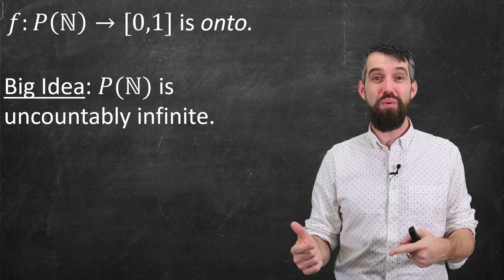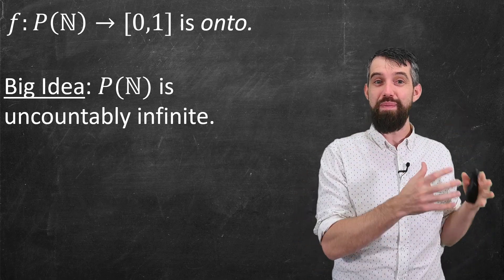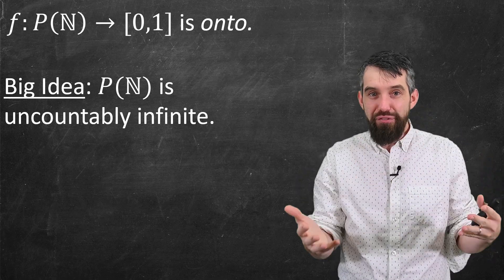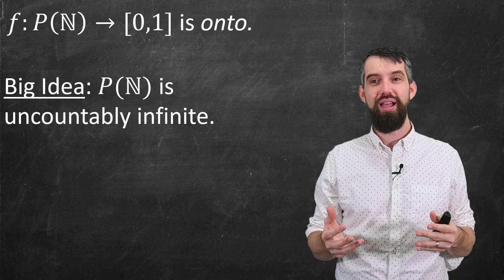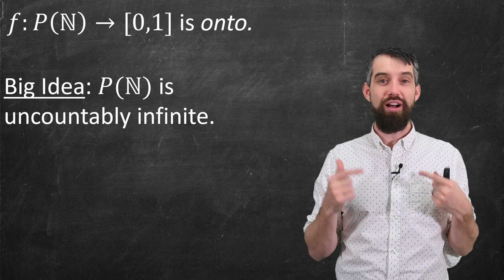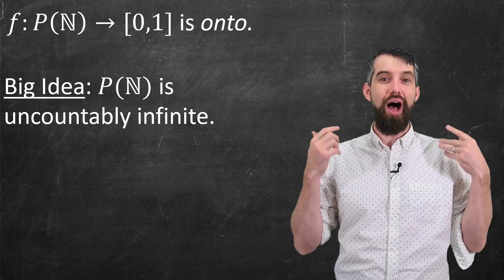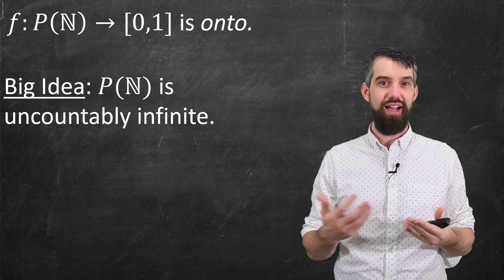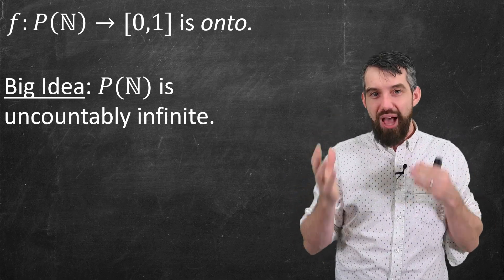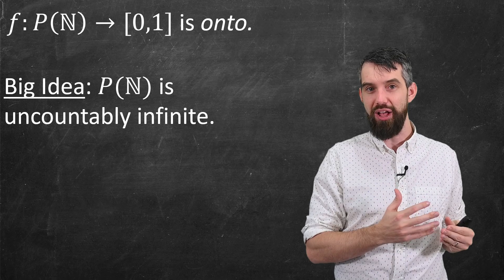And because I've just shown you this function that takes in the power set of the natural numbers and hits every single thing in the interval [0, 1], this tells us that the power set of the natural numbers itself is also uncountably infinite, a type of infinity that is bigger than the countable infinity of the natural numbers itself.